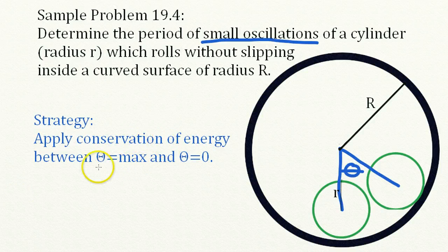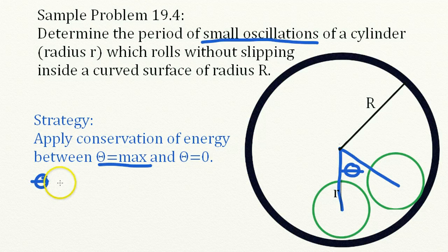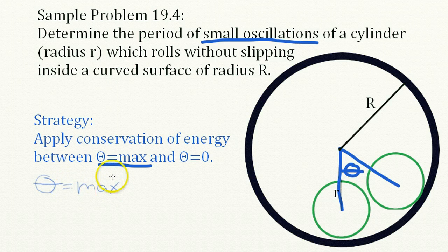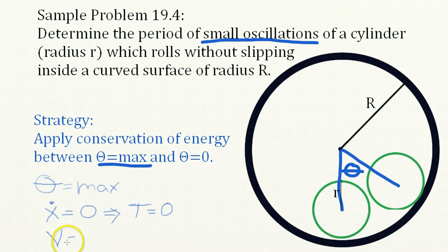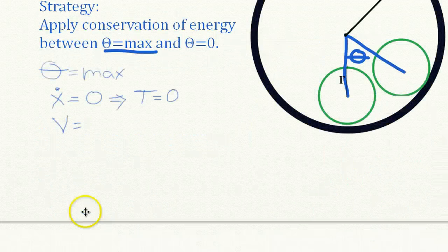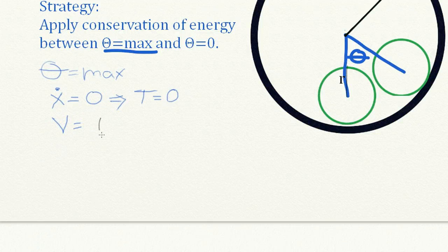Let's do this first at the maximum angle. At the maximum, by definition, the velocity will be zero, and therefore the kinetic energy will be zero. So all we need to do is calculate the potential energy V. The potential energy will equal the weight of the cylinder times the height, and we need to write an expression for the height.